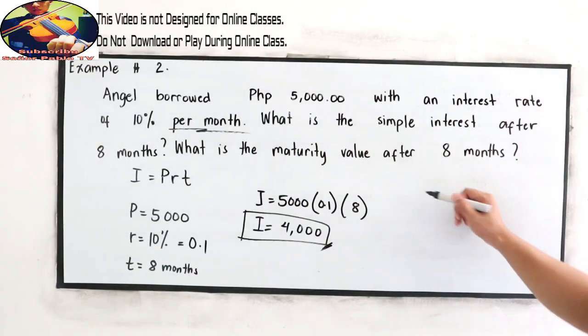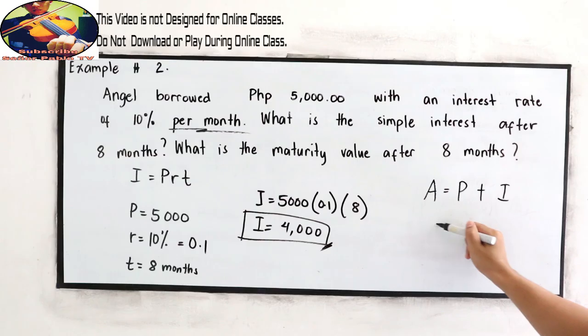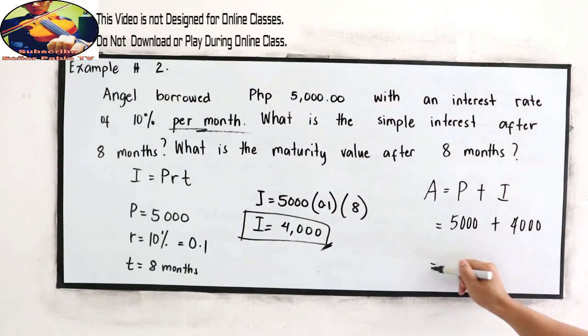And our maturity value. So our maturity value is the principal plus the interest. So principal is 5,000 plus our interest is 4,000. So that is 9,000 pesos.